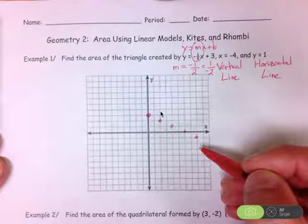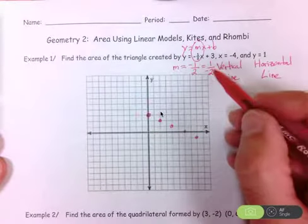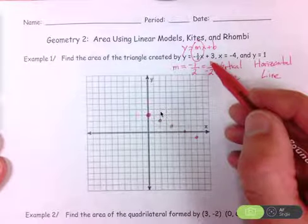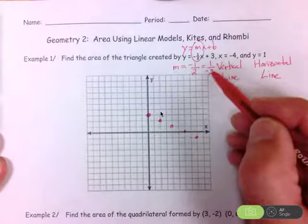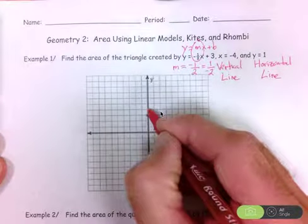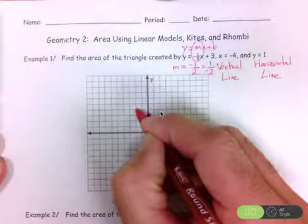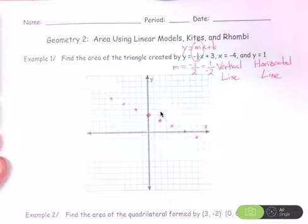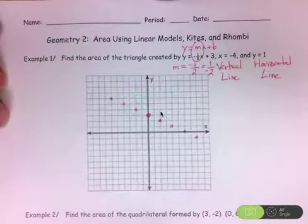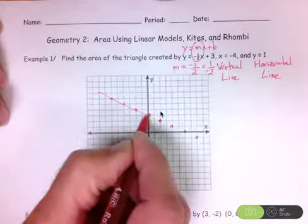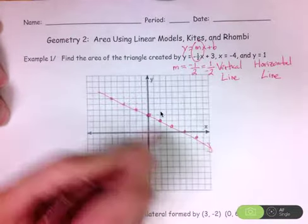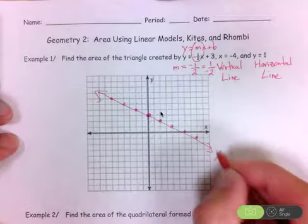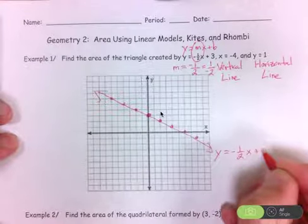You can also start from the y-intercept and use the slope of positive one over negative two, which means up one and left two. Repeating that gives us up one, left two, up one, left two — and that gives us a full set of points representing the linear model y equals negative one-half x plus three.